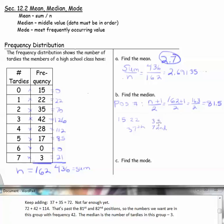If we add the next frequency, 42, plus 72, that would be 114th. That's farther than we need to go, past our 81st and 82nd positions. So the numbers we want are in this group with frequency 42. The numbers we're looking for are in this group with the frequency 42, and that would be the 3. So the median would be 3.